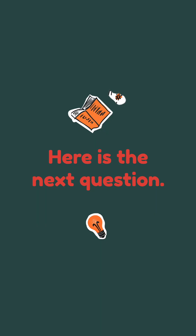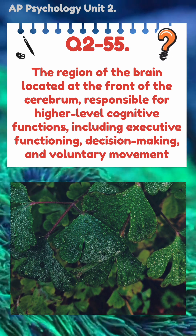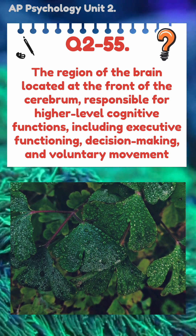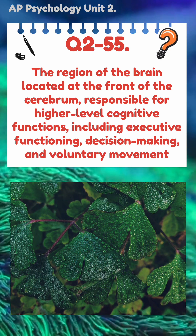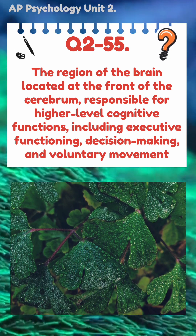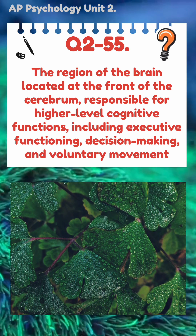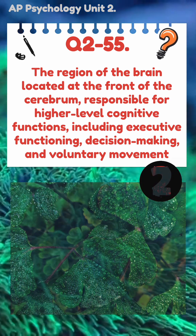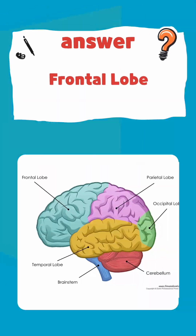Here's the next question. The region of the brain located at the front of the cerebrum, responsible for higher-level cognitive functions, including executive functioning, decision-making, and voluntary movement. The answer is frontal lobe.